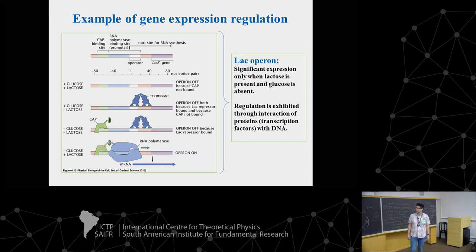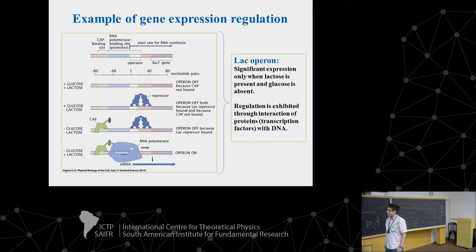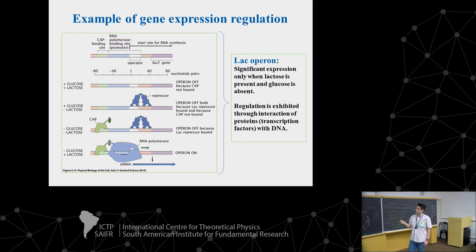In addition to protein-DNA interactions, we can also have protein-protein interactions. For example, an activator — shown in green — interacts with RNA polymerase and recruits it to the DNA. Given all these possible conformations and interaction energies, what should be the rate of expression of our gene — that is, how many messenger RNAs per second will be expressed?